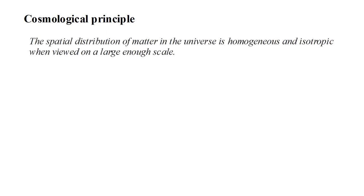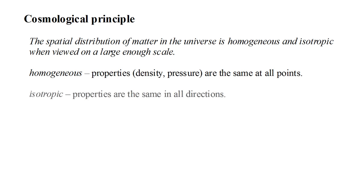We will provisionally assume an infinite universe with a uniform distribution of matter, as formalized in the cosmological principle, which can be stated as: The spatial distribution of matter in the universe is homogeneous and isotropic when viewed on a large enough scale. Homogeneous means that all properties are the same at all points in space. Isotropic means that all properties are the same in all directions in space.